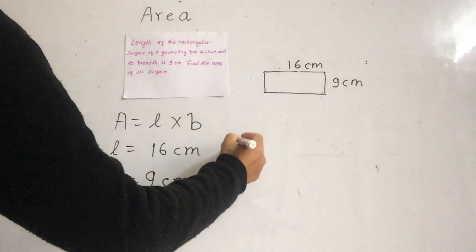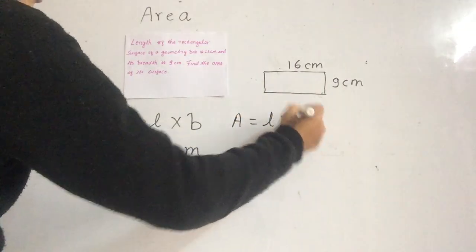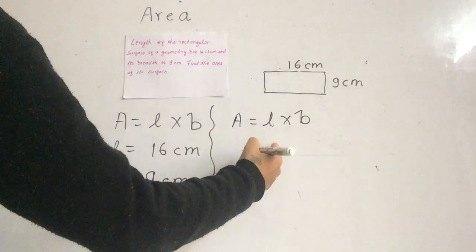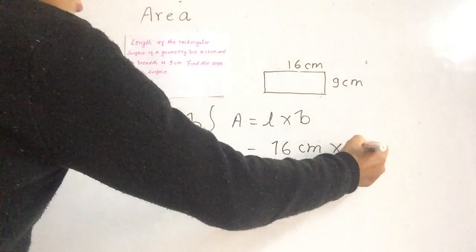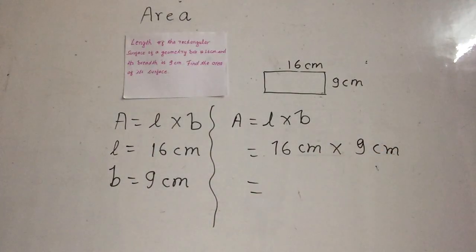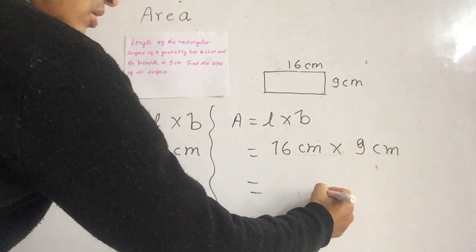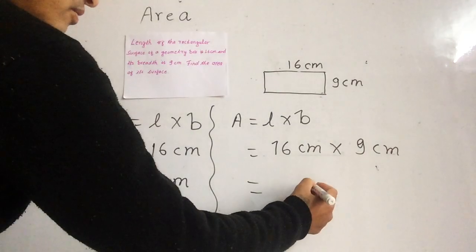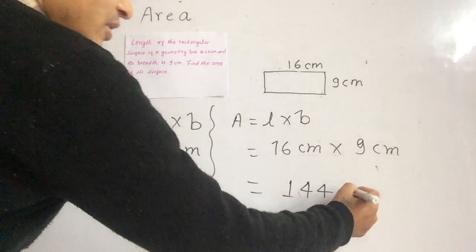We can use the formula here: area is equal to length times breadth. So length is 16 cm times breadth 9 cm. That is 9 times 6 is 54, 9 times 1 is 9, and 9 plus 5 is 14 — giving us 144 square centimeters.